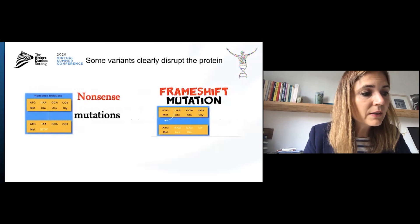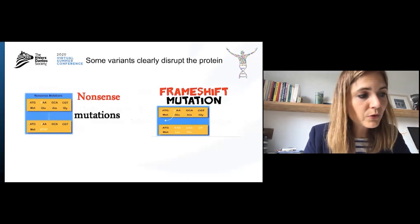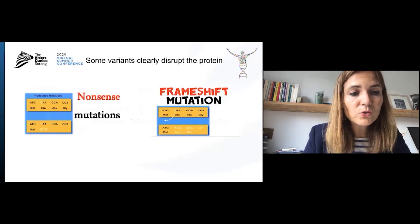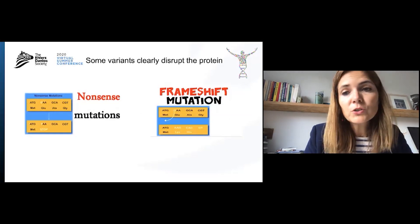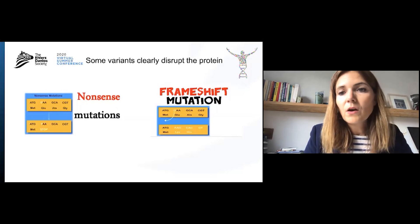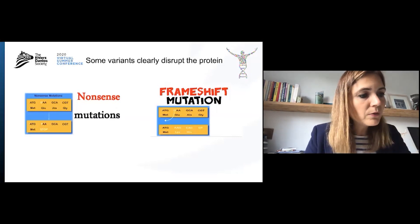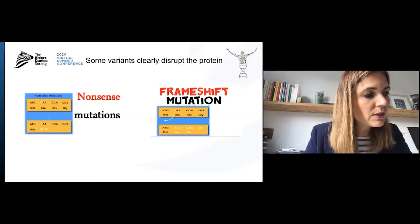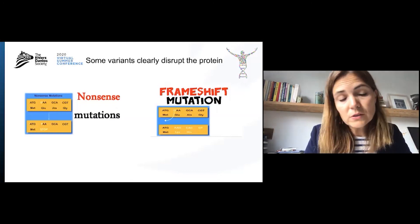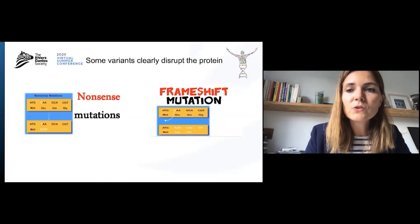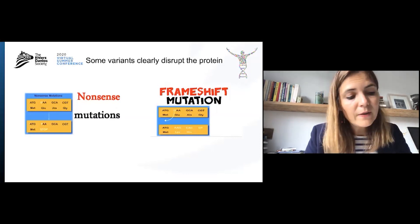For some variants, it is very clear that they disrupt the function or the structure of the protein. Some mutations, for instance nonsense mutations, introduce a premature stop, and this will usually result in less or no protein being made. Other types of mutations, such as frameshift mutations, will change the reading frame of the three-letter codons, and this may lead to the production of a totally abnormal protein or also to less protein being made. So if we in the lab find nonsense mutations or frameshift mutations, we usually know that these are actually mutations and not just benign variants.